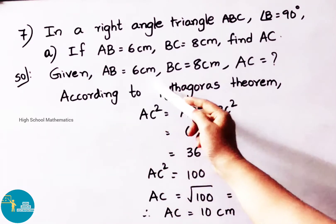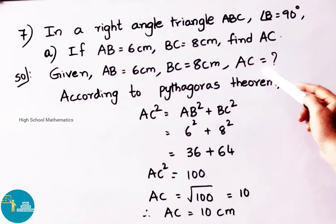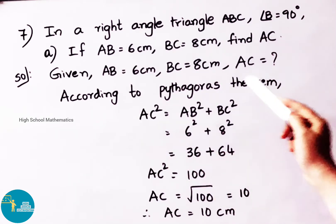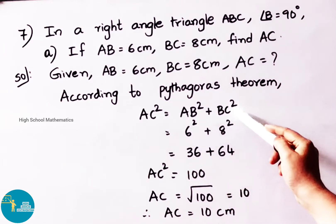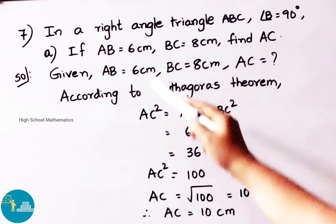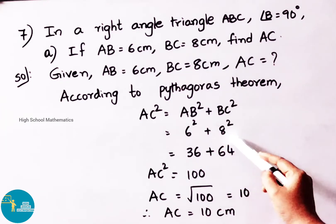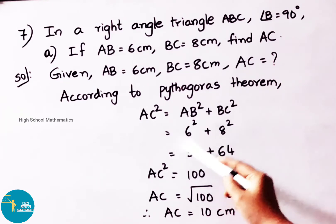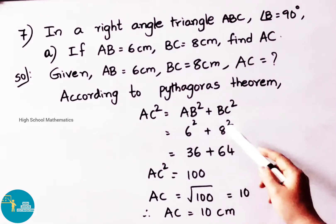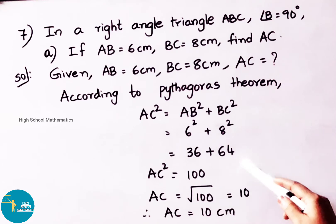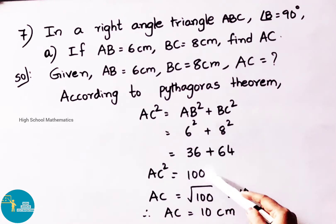Given AB equals to 6 centimeter, BC equals to 8 centimeter, we need to find AC. According to Pythagoras theorem, AC square equals to AB square plus BC square. That equals to 6 square plus 8 square, which is 36 plus 64. So AC square equals to 36 plus 64, that is 100.